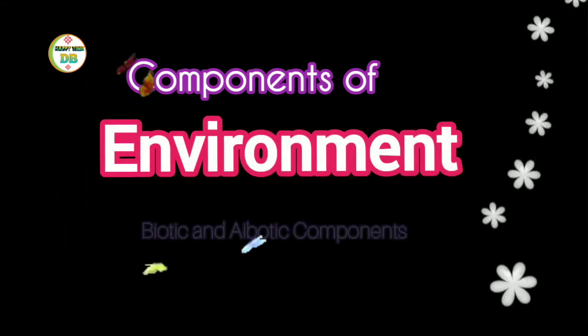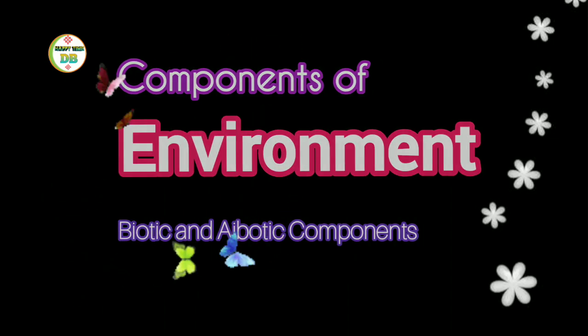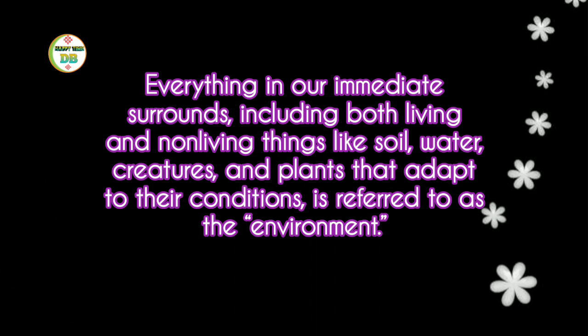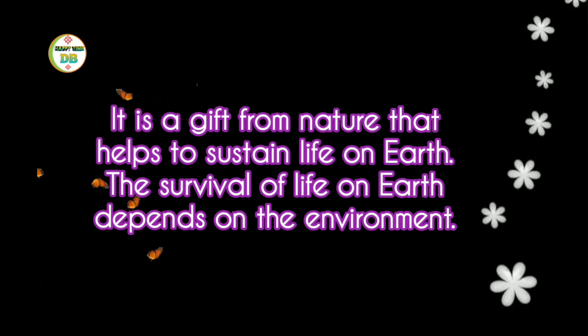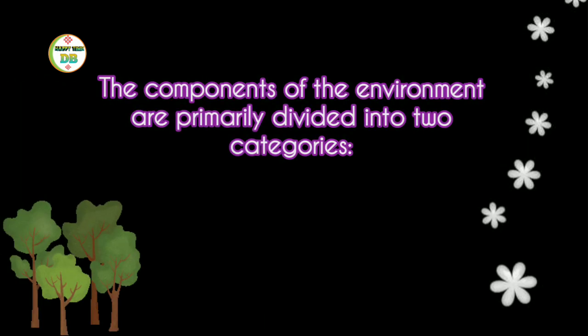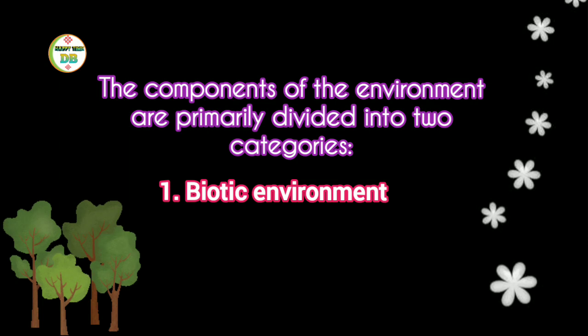Components of Environment: Biotic and Abiotic Components. Everything in our immediate surroundings, including both living and non-living things like soil, water, creatures, and plants that adapt to their conditions, is referred to as the environment. It is a gift from nature that helps to sustain life on Earth. The components of the environment are primarily divided into two categories: Biotic Environment and Abiotic Environment.